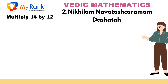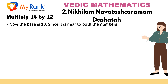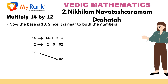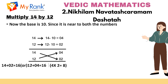Now let us look into Example 1: multiply the number 14 by 12. Here the base is 10 since it is near to both the numbers 14 and 12. So 14 minus base 10 equals 4, and 12 minus base 10 equals 2. Now the left hand side of the answer: we need to add the numbers crosswise, that is 14 plus 2 equals 16, and 12 plus 4 equals 16. Hence 16 is the left hand side of the answer. The right hand side: multiply vertically, 4 into 2 equals 8. The combined answer is 168.